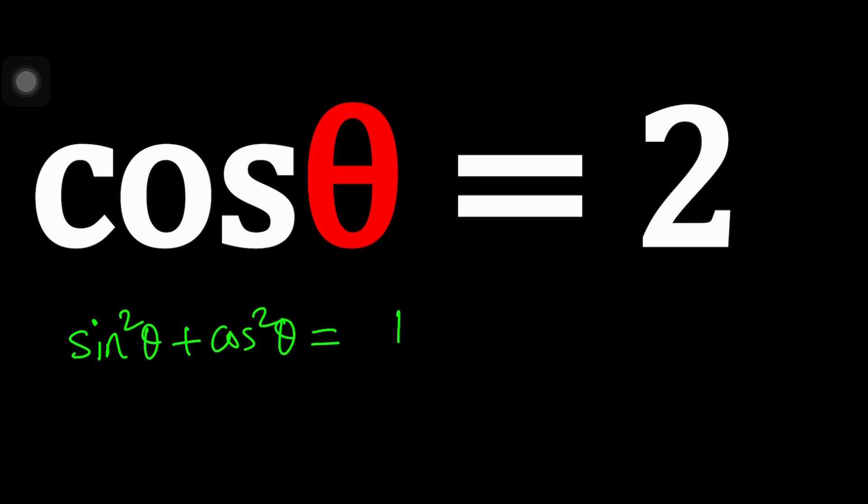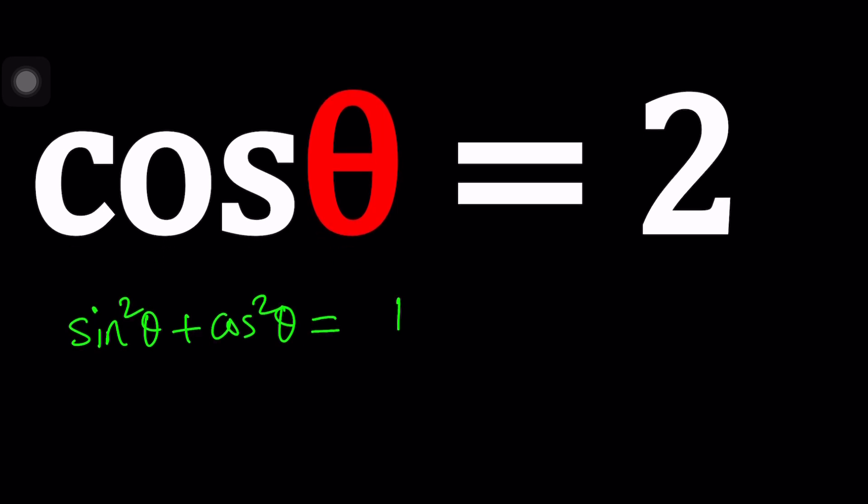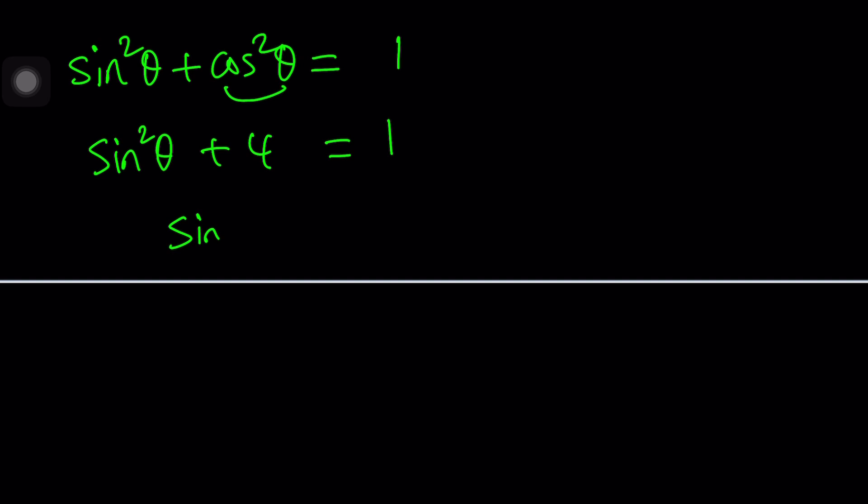Now where do we go from here? We can replace cosine with the value given, which is two. Cosine squared means two squared, so it's going to be four. And if you solve this equation, you're going to get sine squared theta equals negative three. Uh-oh, Houston, we have a problem. The problem is something squared is negative. It can't happen in real world, can it?